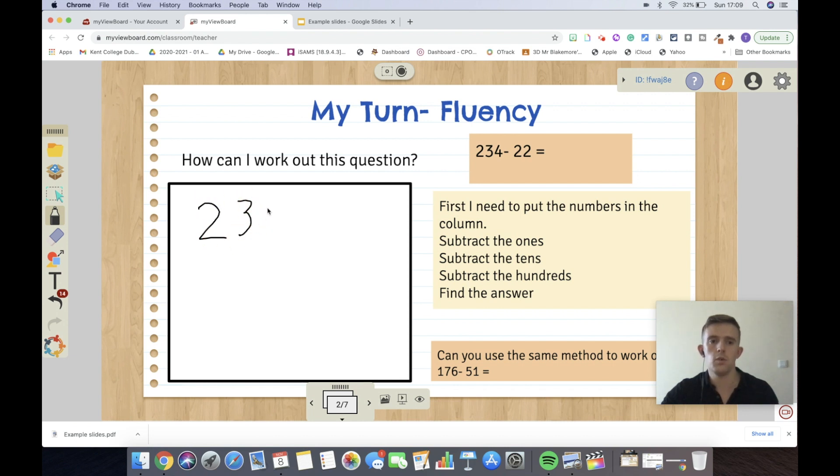So, 234 subtract 22. Make this even better by having squares involved, which it's quite simple to do through here. So, then we subtract the 1, subtract the 10, subtract the 100, and then we can move our answer up here.